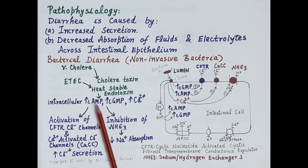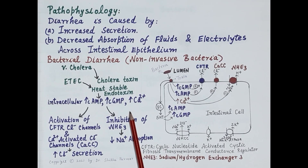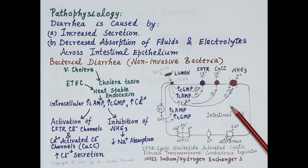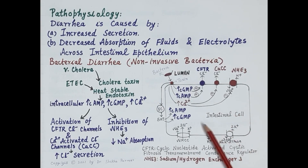Enterotoxigenic E. coli produces a heat-stable endotoxin, while Vibrio cholerae produces cholera toxin. These bacteria produce mostly self-limiting, loose, watery diarrhea that persists for no more than two weeks. The diagram shown clearly explains how non-invasive bacteria increase secretion and reduce absorption, leading to diarrhea.